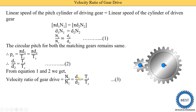From this equation, in the diagram the driving gear has T1 = 8 teeth and the driven gear has T2 = 24 teeth. So the velocity ratio equals 8/24 = 1/3. This means when the driving gear rotates 3 revolutions, the driven gear rotates only 1 revolution.